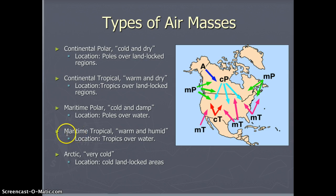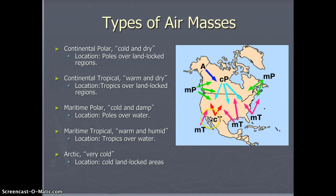The fourth type is maritime tropical. We get this a lot. Maritime means from the ocean, so it is humid. It's tropical, so it's warm. We can get a maritime tropical coming off the Pacific over Mexico to the southwestern United States, but for us here in Texas, we get our maritime tropicals straight from the Gulf of Mexico. Most of our winds come from the southeast, so it's warm and wet.